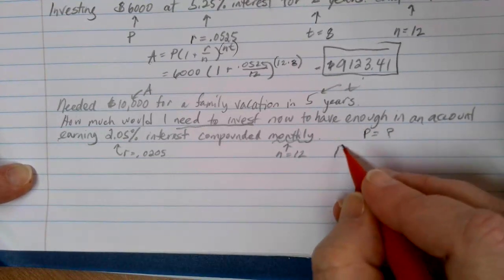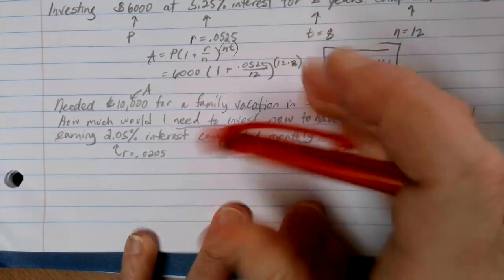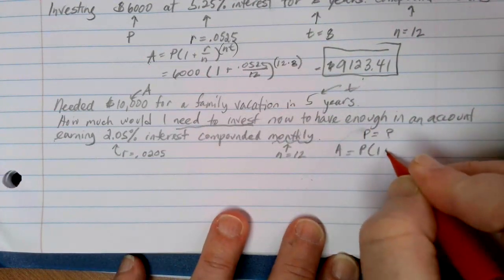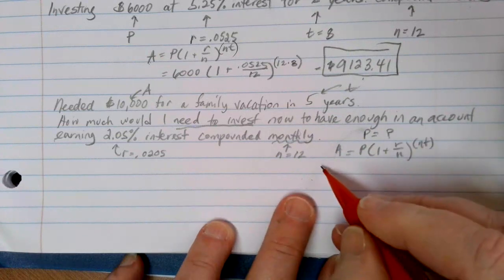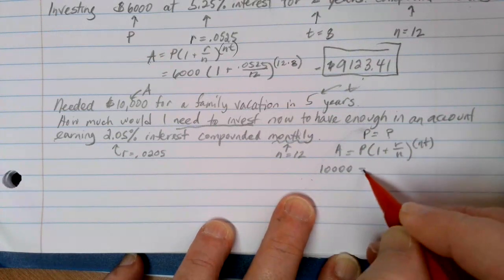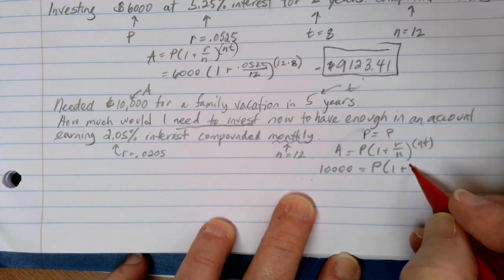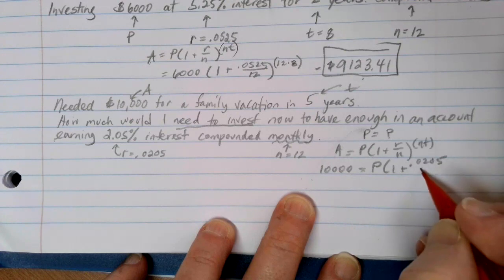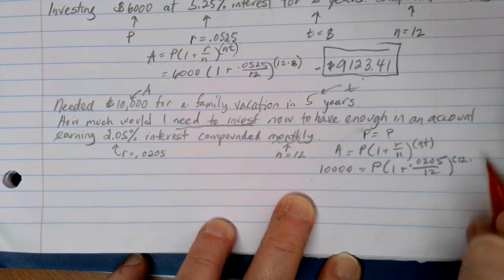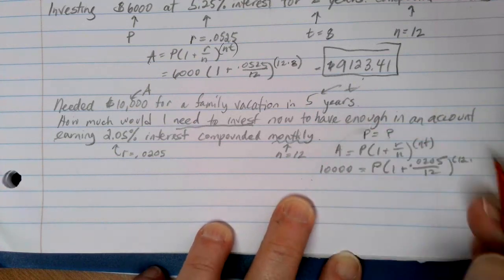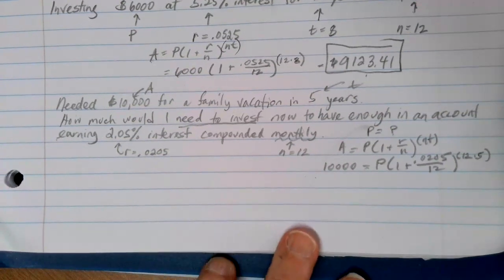So if I start with, here's my formula. A equals P times 1 plus R over N to the Nt power. My A is going to be $10,000. P, I don't know, times 1 plus R is 0.0205 divided by 12 to the, and then in the exponent, I need 12 times 5 years. And I'll have that in parentheses to make sure that that all works out okay.